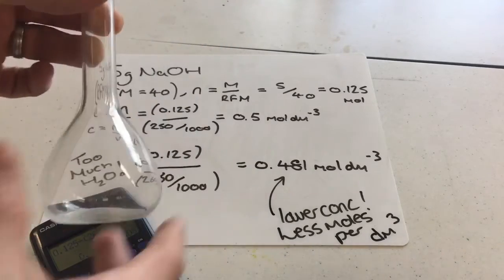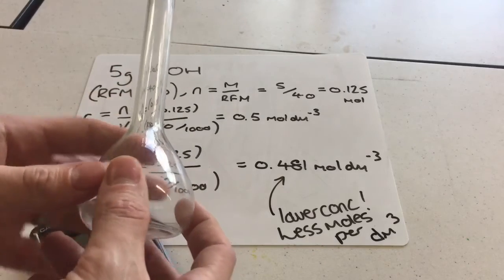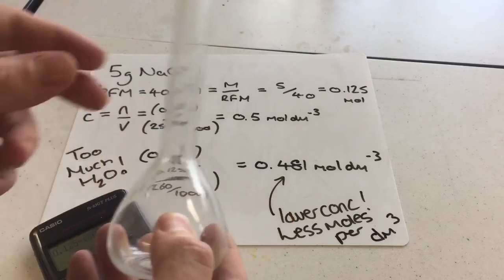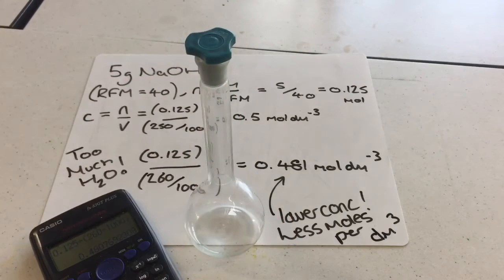Now, with a volumetric flask - it's quite difficult to see on the video, but there is a line just here. What normally happens is you are trying to prepare a standard solution.